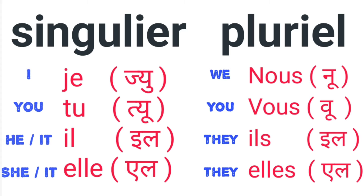First, 'I' — in French we call it 'je.' Next is 'you' — we call it 'tu.' This is the informal version. If you call someone in a friendly way, you say 'tu.' For a formal or polite version, we call it 'vous.'